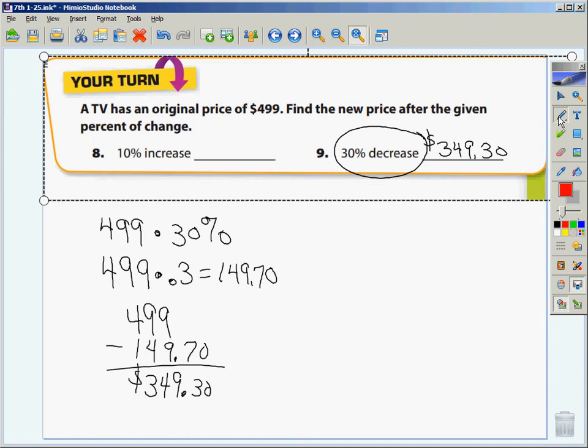Likewise the other method works here as well. How much of the $499 would I normally pay percentage wise? 100%. If it's having a 30% decrease I'm taking 30% off of that 100%. How much am I paying for? 70%. So I could take the $499 times 70% which is $499 times 0.7. And what is this going to come out to? $349.30.